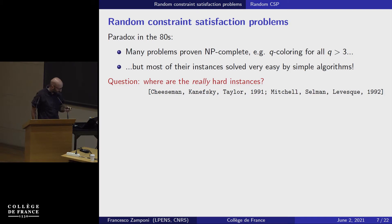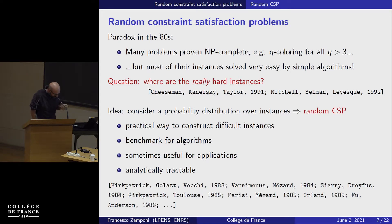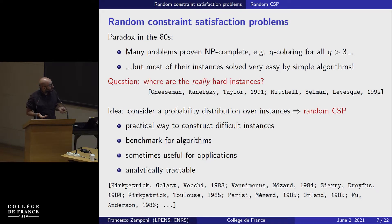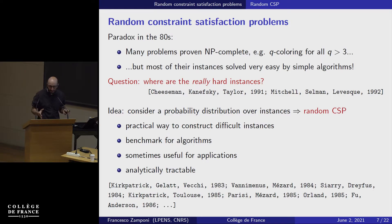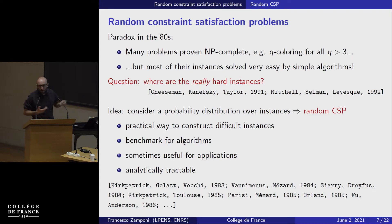The popular idea was: instead of looking at single instances, look at an ensemble of instances. Take a probability distribution over instances with fixed difficulty — fixing the ratio of constraints to variables. In graph coloring, fix the ratio of edges to nodes and take a uniform distribution over all graphs with that ratio. This is called a random constraint satisfaction problem — a random ensemble of instances. It was realized this was a convenient way to construct difficult instances, benchmark algorithms, and moreover, that random CSPs can be analytically tractable.